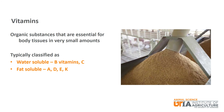Vitamins are organic substances that are essential for body tissues, but are needed in relatively small amounts. They are typically classified as water-soluble or fat-soluble vitamins. Water-soluble vitamins include all of the B vitamins and vitamin C. Fat-soluble vitamins include A, D, E, and K.